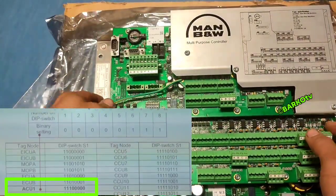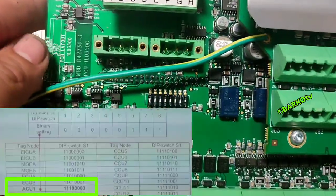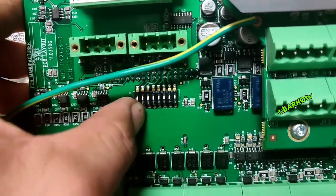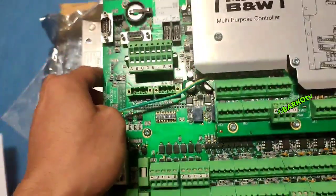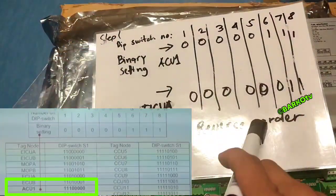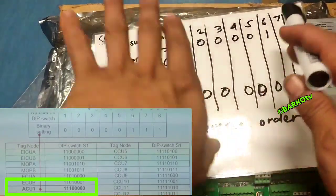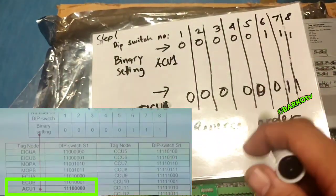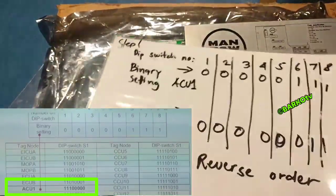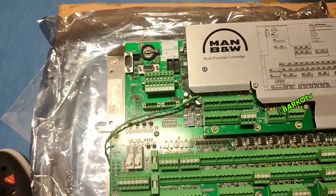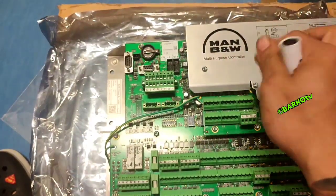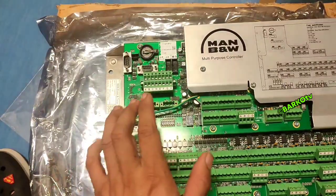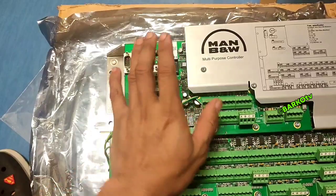As you can see, S1 has positions 1 through 8. You need to set this as per the setting, but it must be in reverse order. The binary setting is not indicated in your on-board manual — it must be sent by the maker. After setting S1, the MPC can run without the ID key.